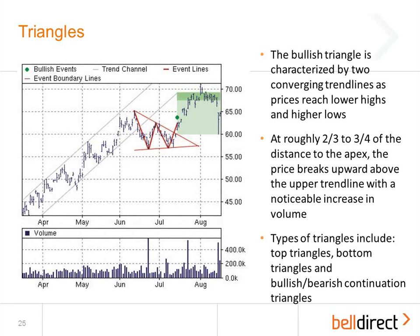There are many different kinds of triangles that you can trade in different ways. Some triangles are reversal patterns — that's the top and bottom triangle — and the rest are continuation patterns, including the ascending continuation triangle and the symmetrical continuation triangle. The one shown here is ascending, because the lower trend line is more or less horizontal. If it was slanting upwards, that would be a symmetrical continuation triangle.